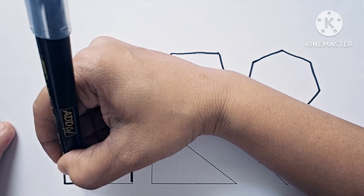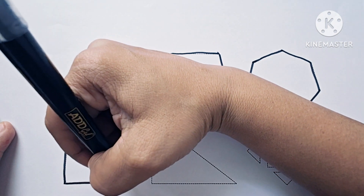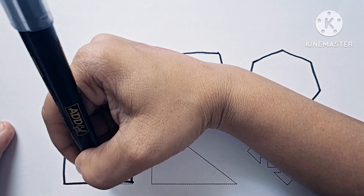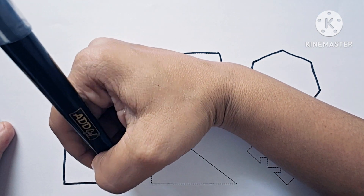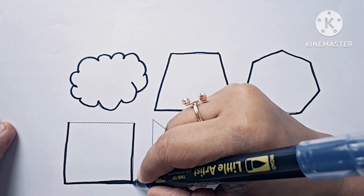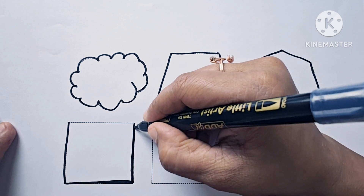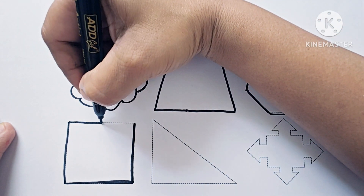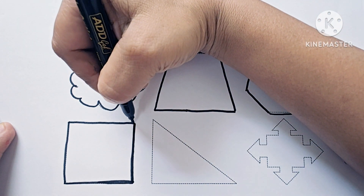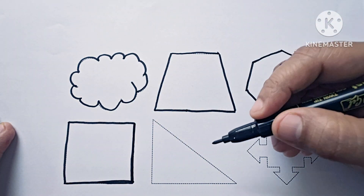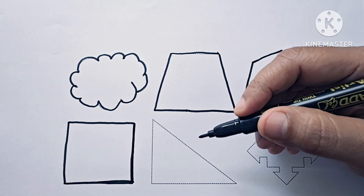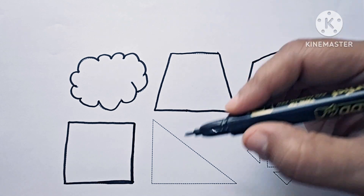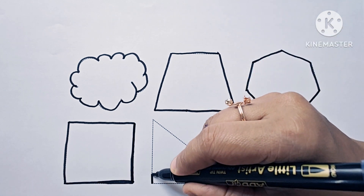This is a square. A square has four sides and all sides are equal.